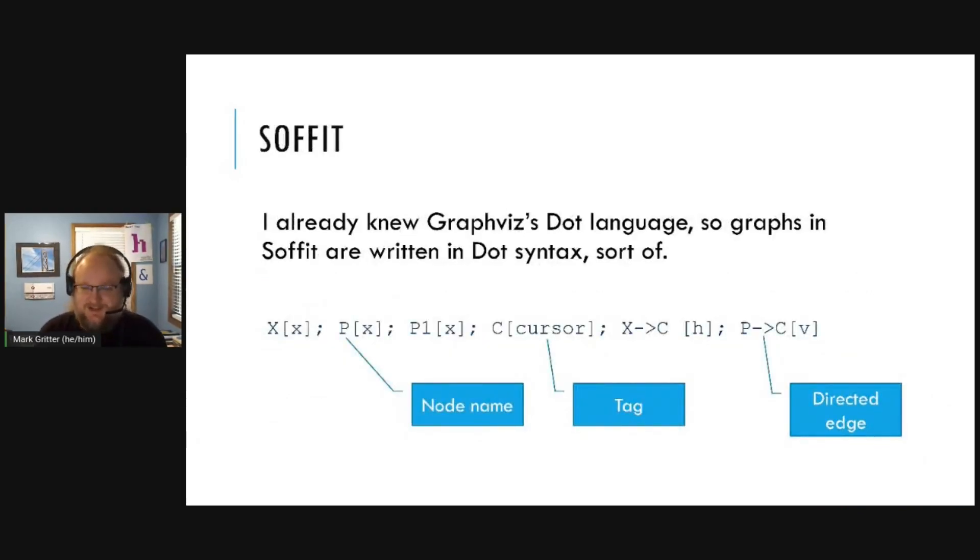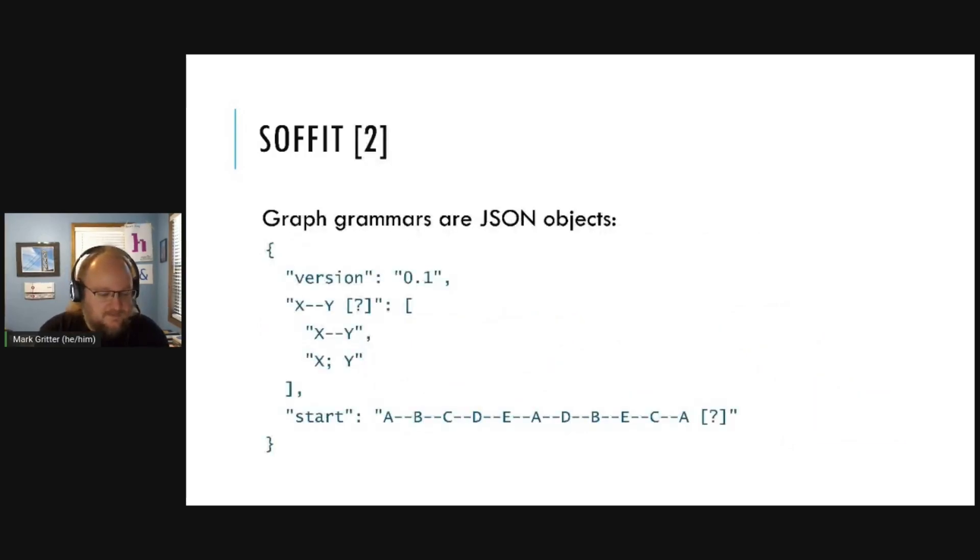So here's a brief introduction of Soffit. I already knew Graphis' dot language. So graphs in Soffit are written in sort of like dot syntax. Here's the name of a node. Here's a tag that we associate with that node. Here's a directed edge. And edges can have tags as well.